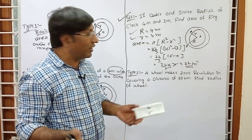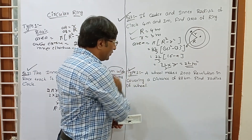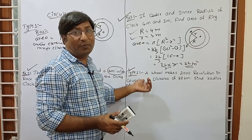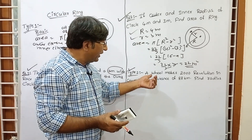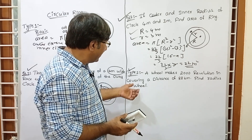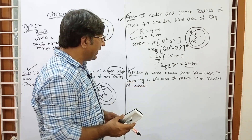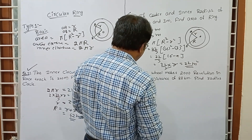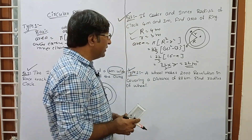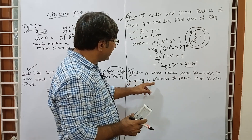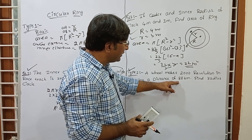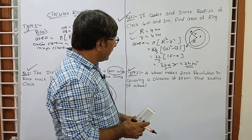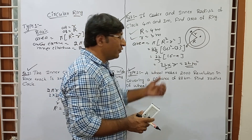So area of ring equals pi into capital R square minus small r square. Now there is a type 2 portion which is very important. A wheel makes 2000 revolutions in covering a distance of 88 km. Find the radius of the wheel.